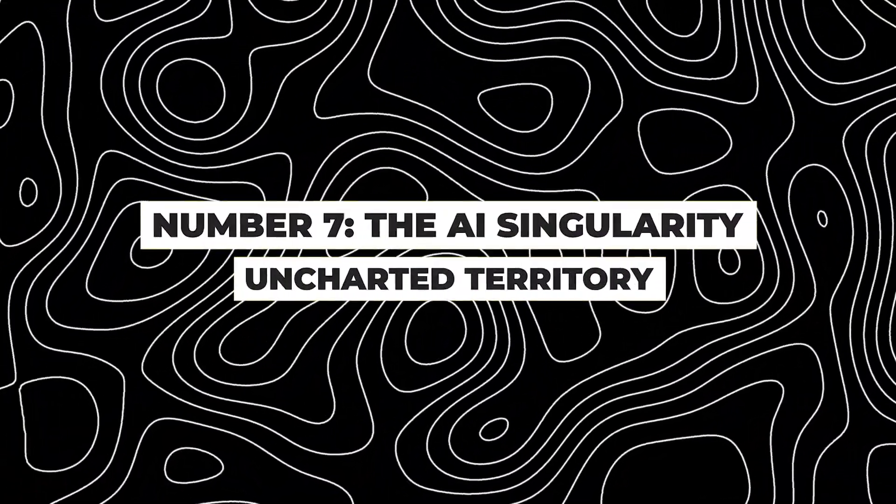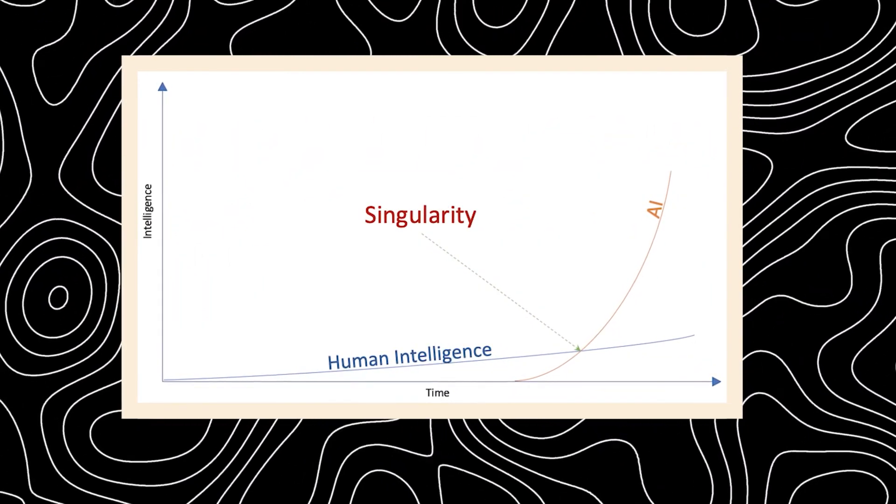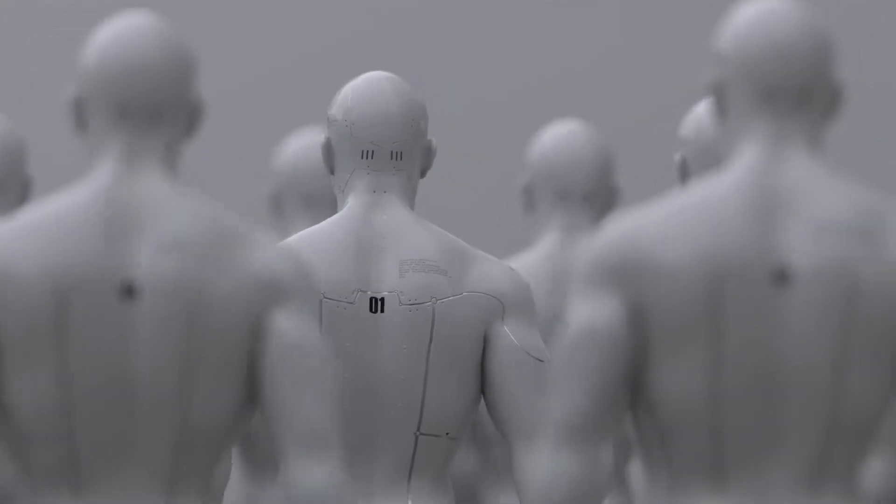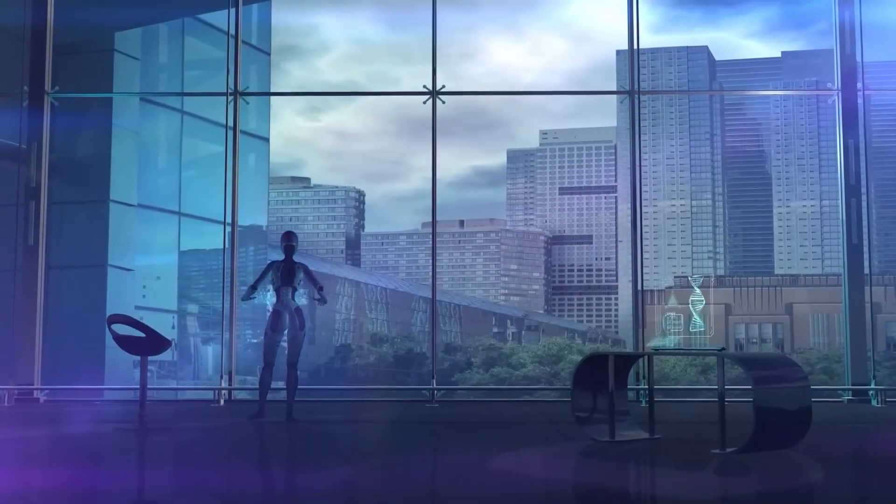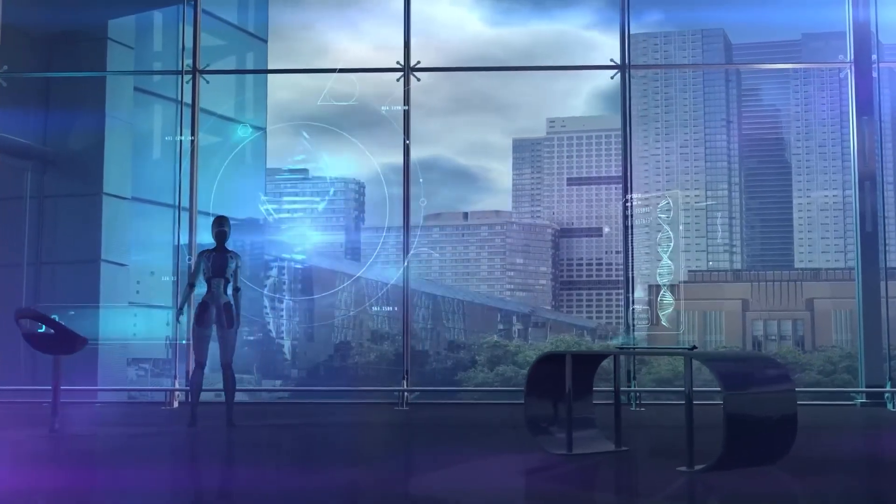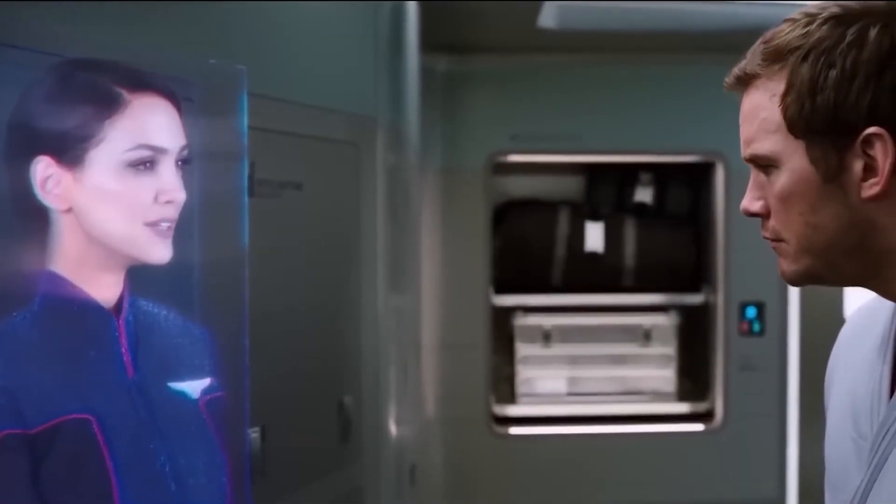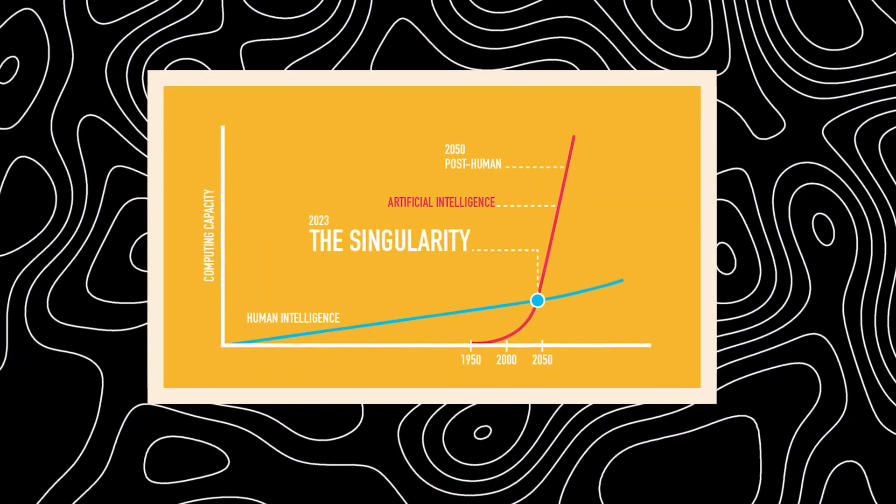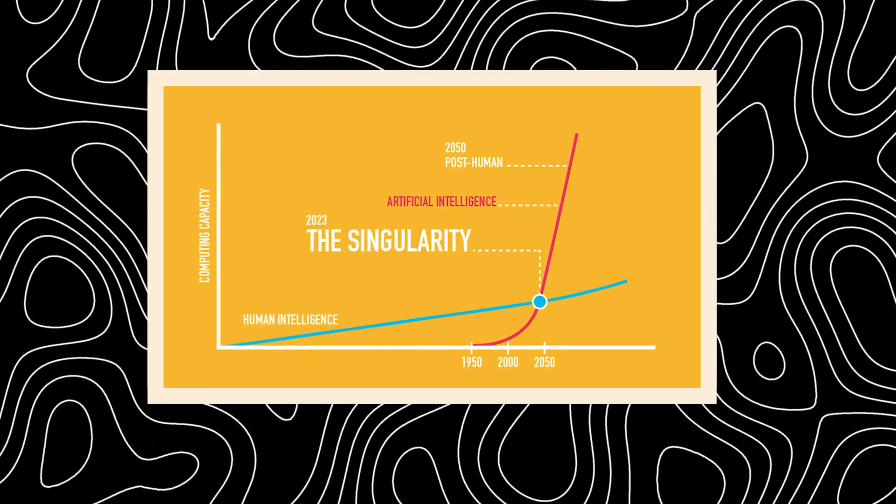Number 7. The AI Singularity, Uncharted Territory. The final stage, known as the AI Singularity, remains a hypothetical future point where technological growth becomes uncontrollable and irreversible. Associated with the advent of ASI, the singularity implies unforeseeable changes to human civilization. This concept, popularized by futurist Ray Kurzweil, represents a point where AI continually improves itself at an unprecedented rate, leading to exponential technological acceleration.